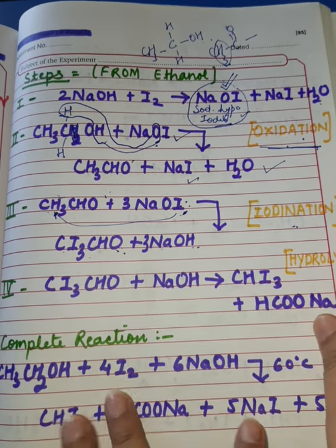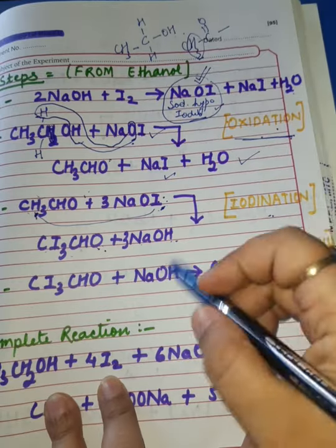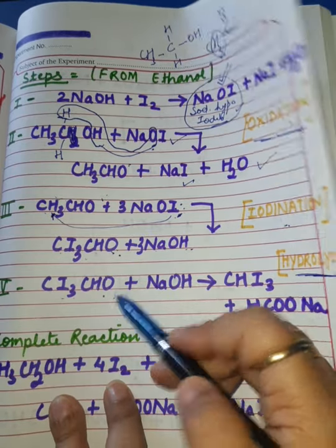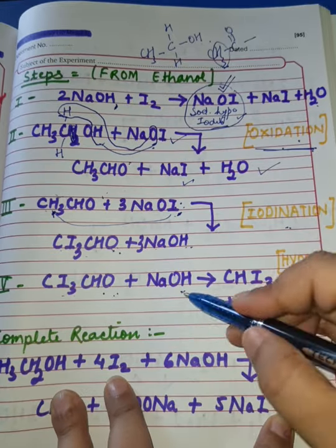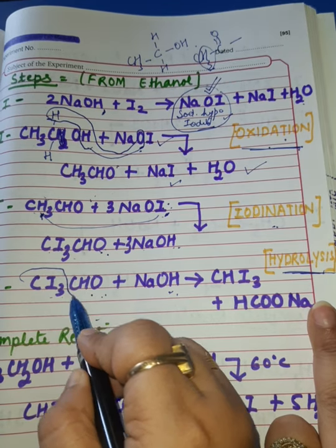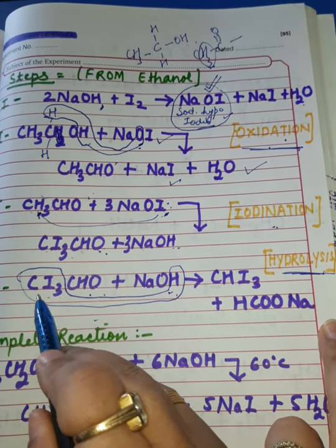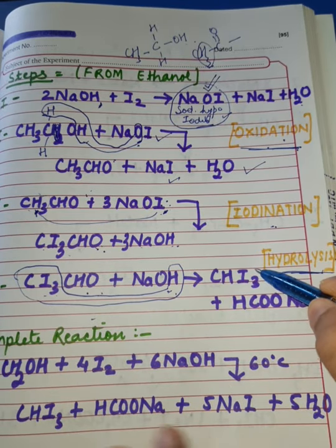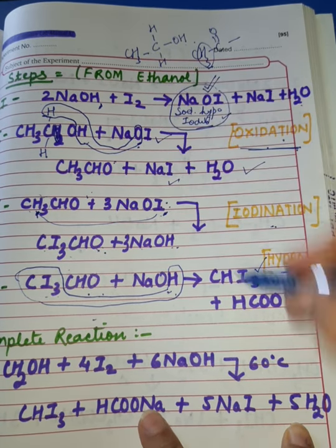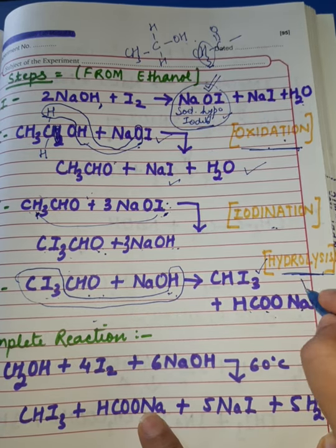After the iodination step comes the last step: Hydrolysis. CI3CHO (Tri-iodo acetaldehyde) is hydrolyzed by NaOH (the alkali used in the reaction). In hydrolysis, CI3 takes one H to form CHI3 (Iodoform). The remaining part sums up to give HCOONa — Sodium Formate.